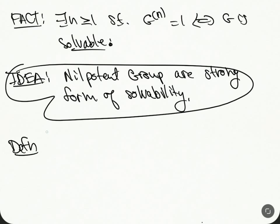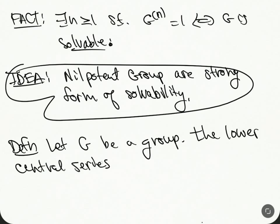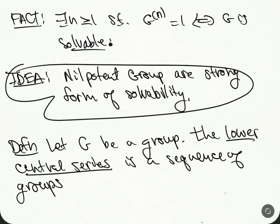Definition: Let G be a group. The lower central series is a sequence of groups. We'll do γ_0, so this is G, γ_1, all the way down and it keeps going. It could potentially be infinite, where γ_0(G) is G.